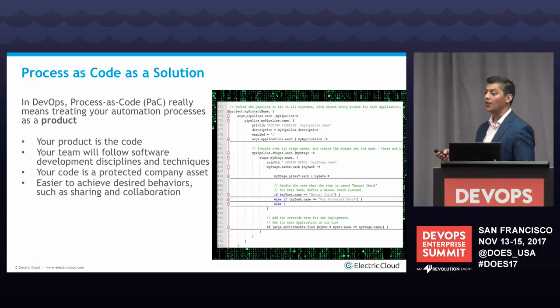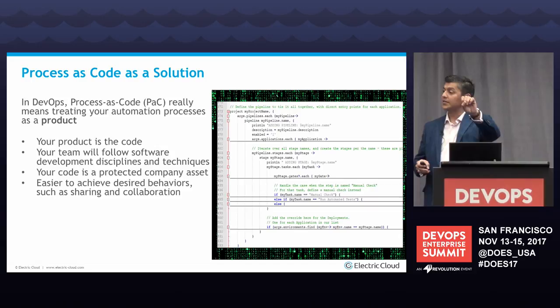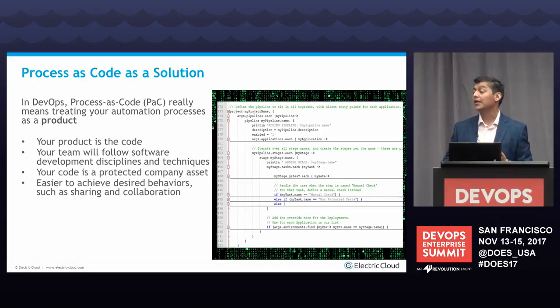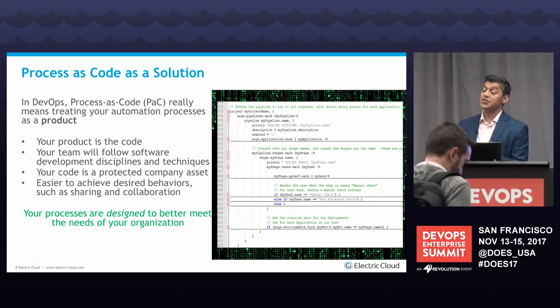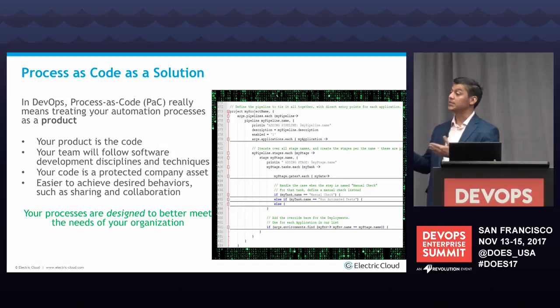It's also easier for teams to achieve desired behaviors of sharing and collaboration. Frequently in UXs, people will design something and no one knows why a particular variable or text is in the screen. With process as code, people can expose things — it becomes less opaque. Your processes, as a result, are going to be designed to better meet the needs of your organization because it's no longer specific to the individual. It is part of your company.